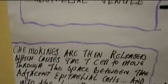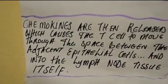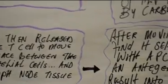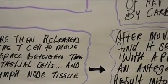Chemokines are released which causes the T-cells to move through the space between the adjacent endothelial cells as shown in the diagram and into the lymph node tissue itself.